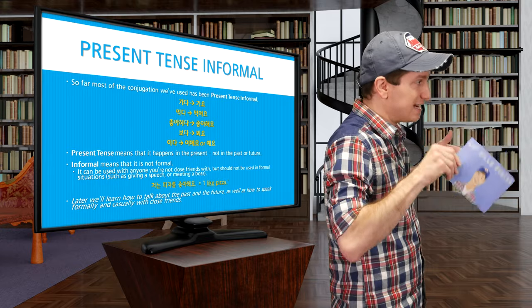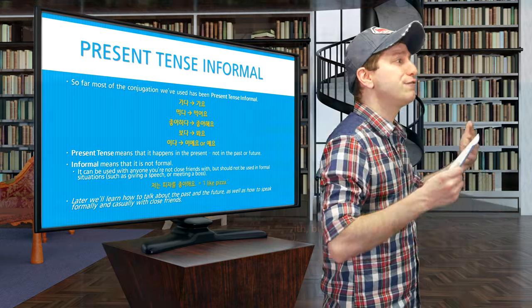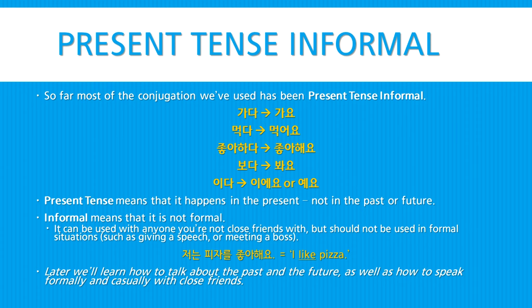Present tense informal: present because it's happening right now, and informal because it's not formal. Here are more examples: 가다 (to go) becomes 가요; 먹다 becomes 먹어요; 좋아하다 becomes 좋아해요; 보다 becomes 보아요; and 이다 becomes 이에요 or 예요. Present tense means it's happening in the present, not in the past or the future.